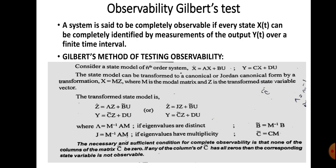After transforming the state model to canonical or Jordan form, we test whether the system is observable. The necessary and sufficient condition for complete observability is that none of the columns of matrix Ĉ be all zero. If any column of Ĉ has all zeros, then the corresponding state variable is not observable.